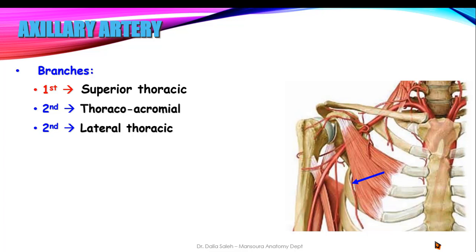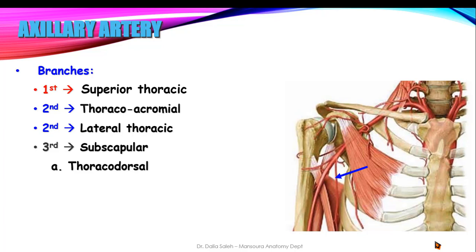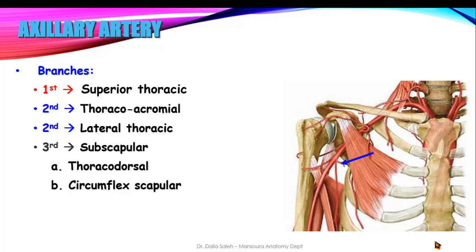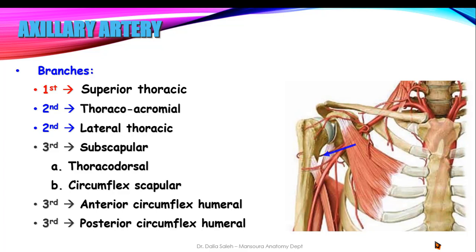From the third part of the axillary artery we have three branches: the subscapular artery, which divides into the thoracodorsal artery and circumflex scapular artery; the anterior circumflex humeral artery, which wraps around the anterior part of the surgical neck of the humerus; and the posterior circumflex humeral artery, which wraps around the posterior surface of the surgical neck of the humerus.